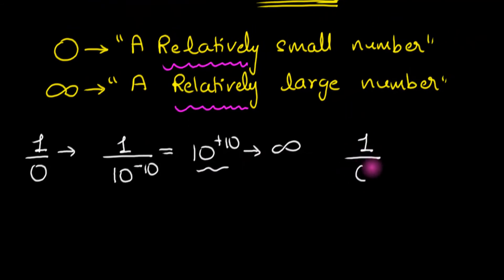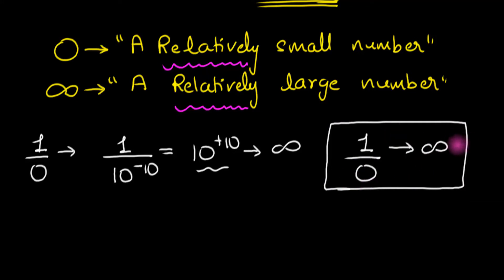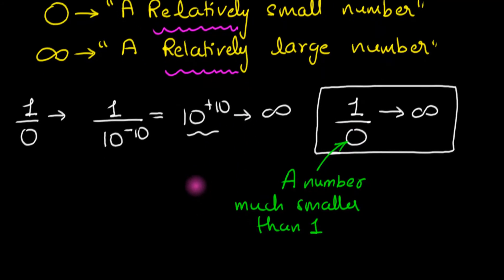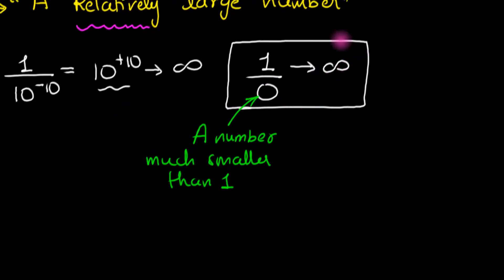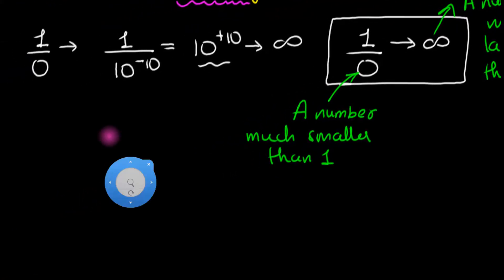That's why we often say 1 divided by 0 tends to become infinity. Hopefully you now understand what this means: if you take 1 and divide by a relatively small number, it doesn't matter what small number you take — as long as it's much smaller than 1, you're going to get a number which is much larger than 1. We don't know exactly what that number is, but it's going to be much larger than 1.